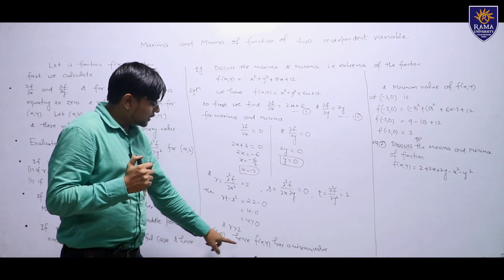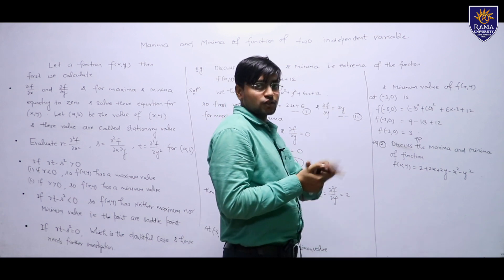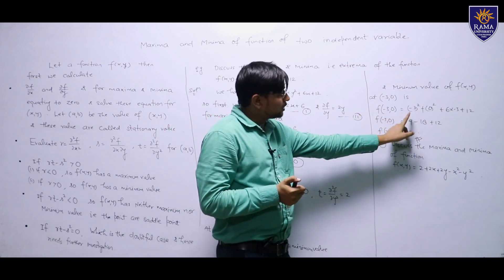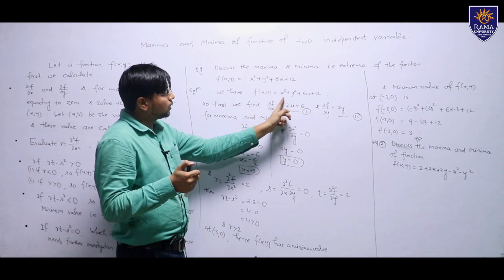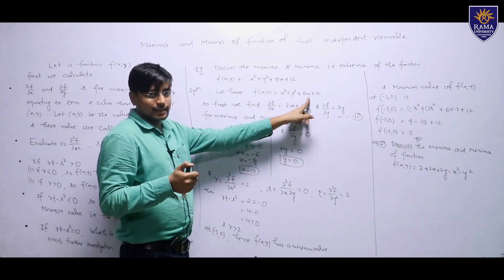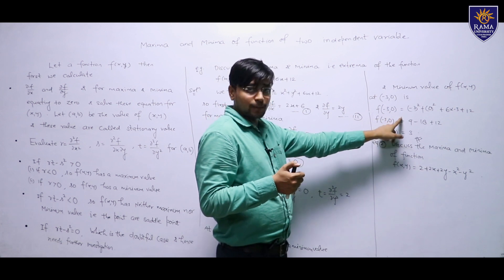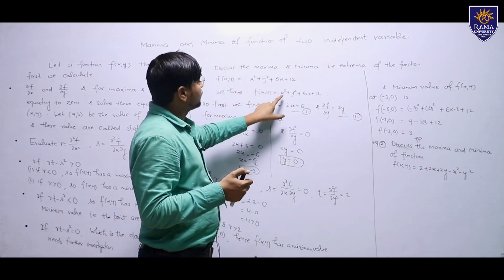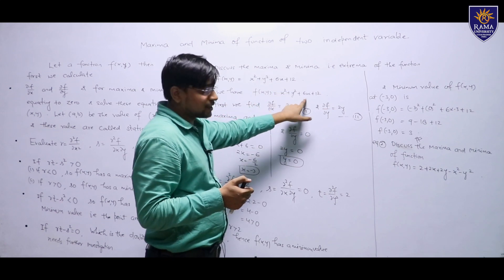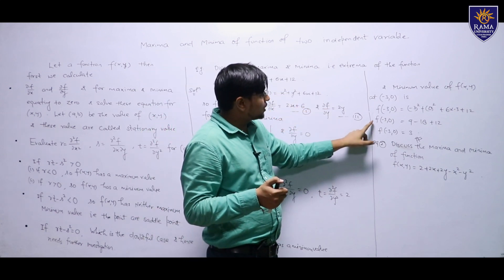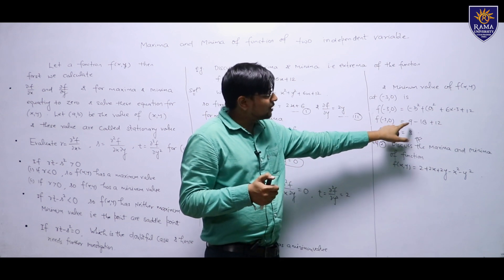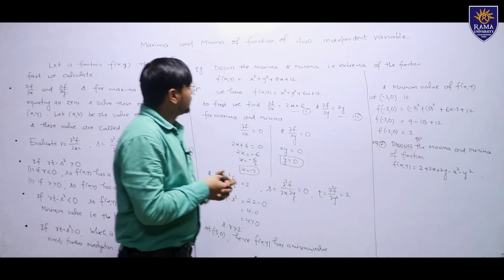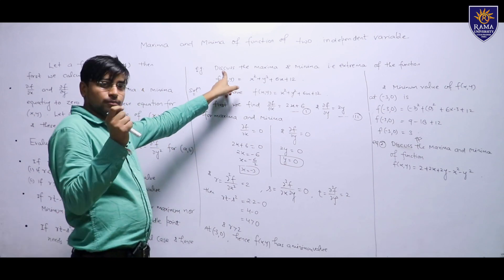At (−3, 0), the minimum value is f(−3, 0). Substituting into f(x,y) = x² + y² + 6x + 12: f(−3, 0) = (−3)² + 0² + 6×(−3) + 12 = 9 − 18 + 12 = 3. So the minimum value of the function is 3.